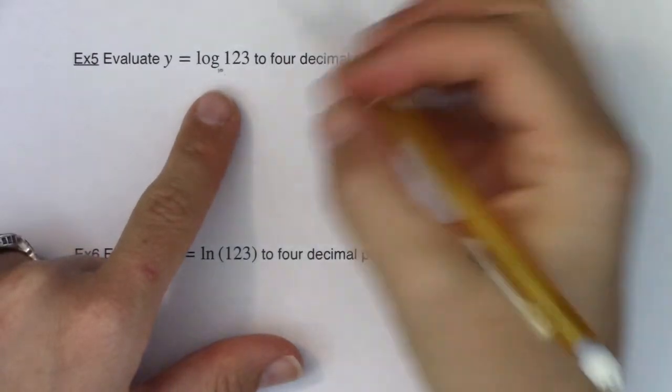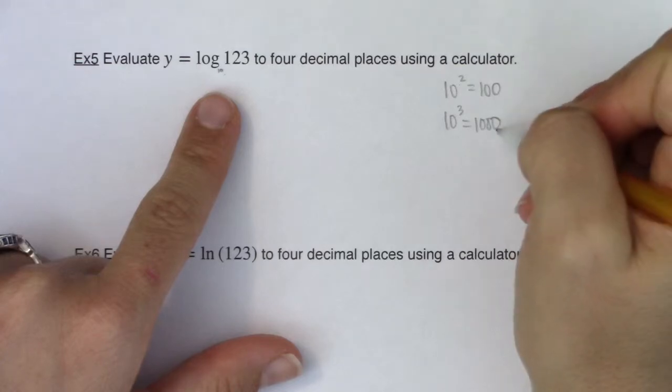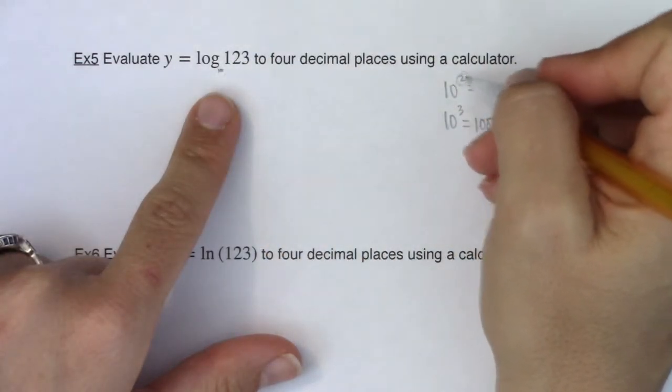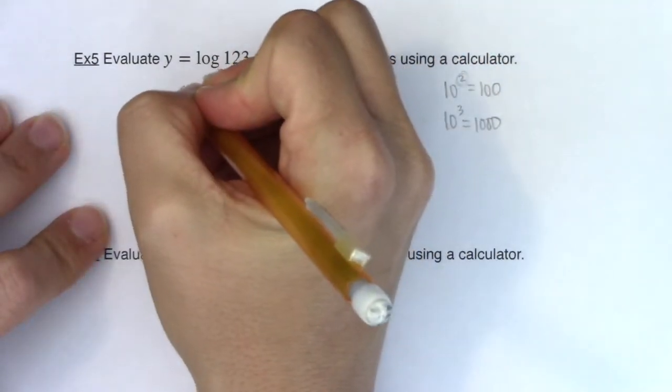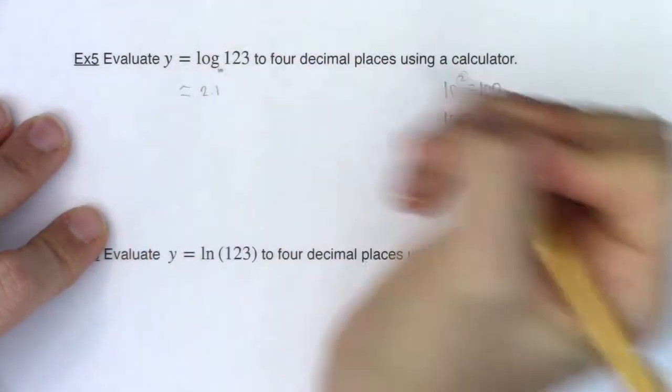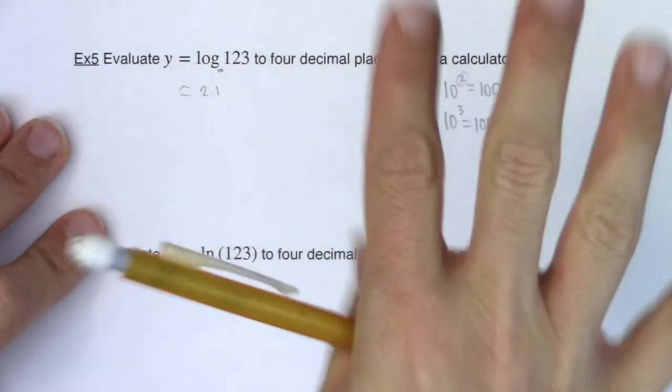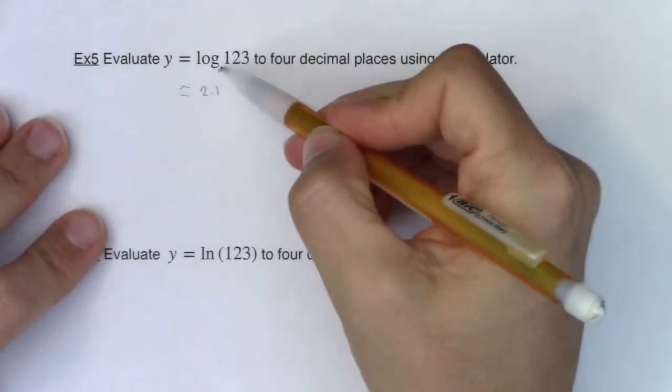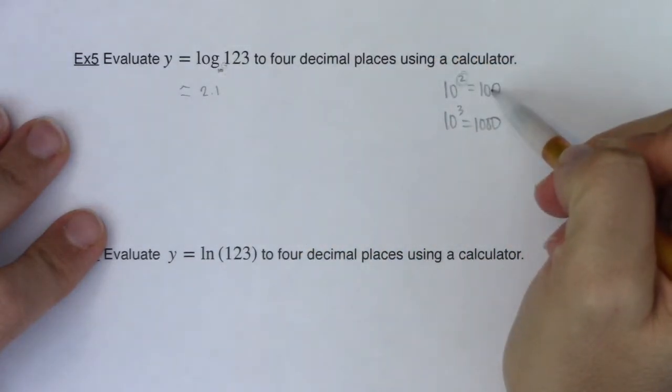Now just taking a look at this, since 123 is much closer to 100 than it is to 1,000, I think this exponent here will be much closer to 2 than it is to 3. So my guess, if I had to just guess this, I think this would be about 2.1. Now I'm going to see what it is. They want us to go to four decimal places. My gut feelings are telling me the exponent I need on 10 to get to 123 has to be a little bit larger than 2, and it's nowhere near 3.